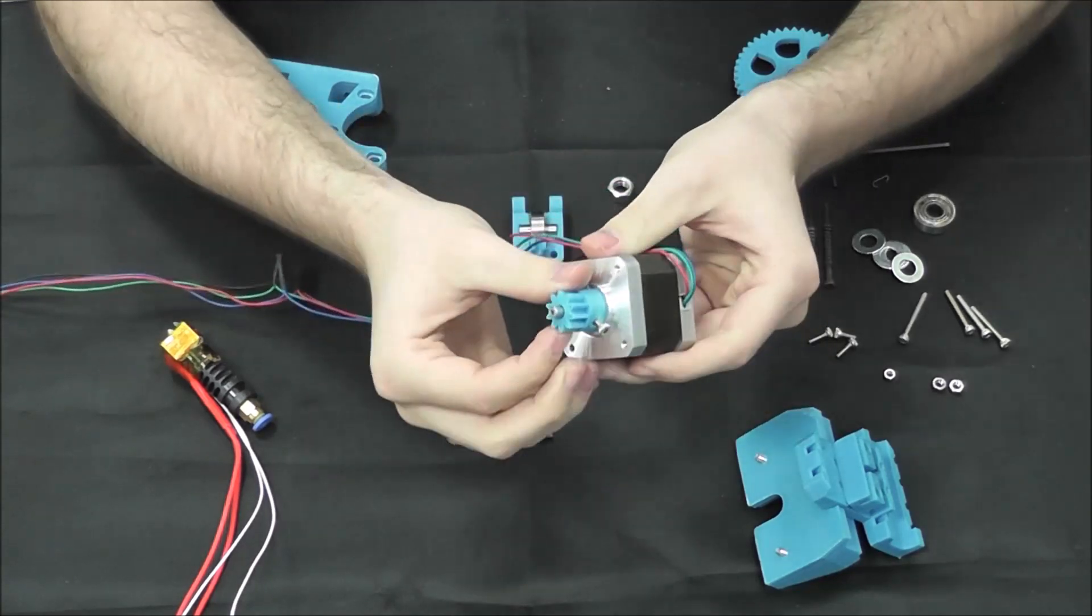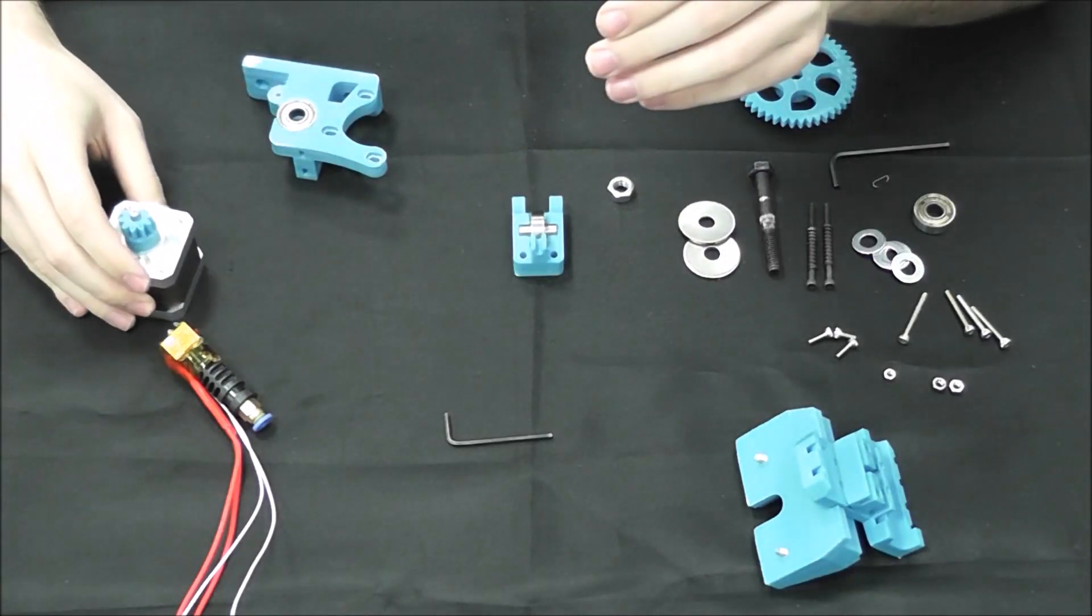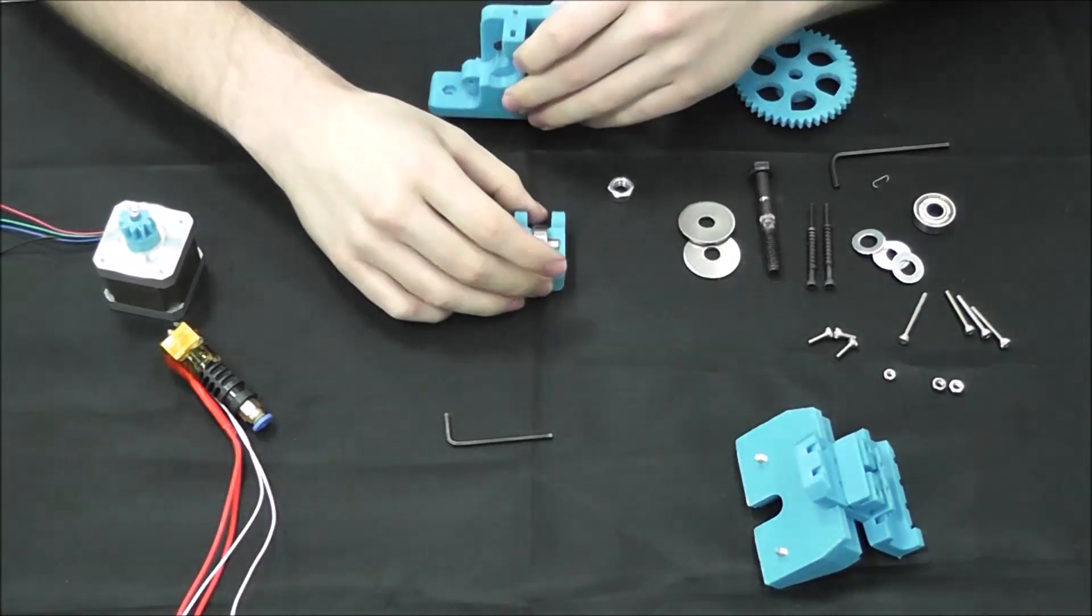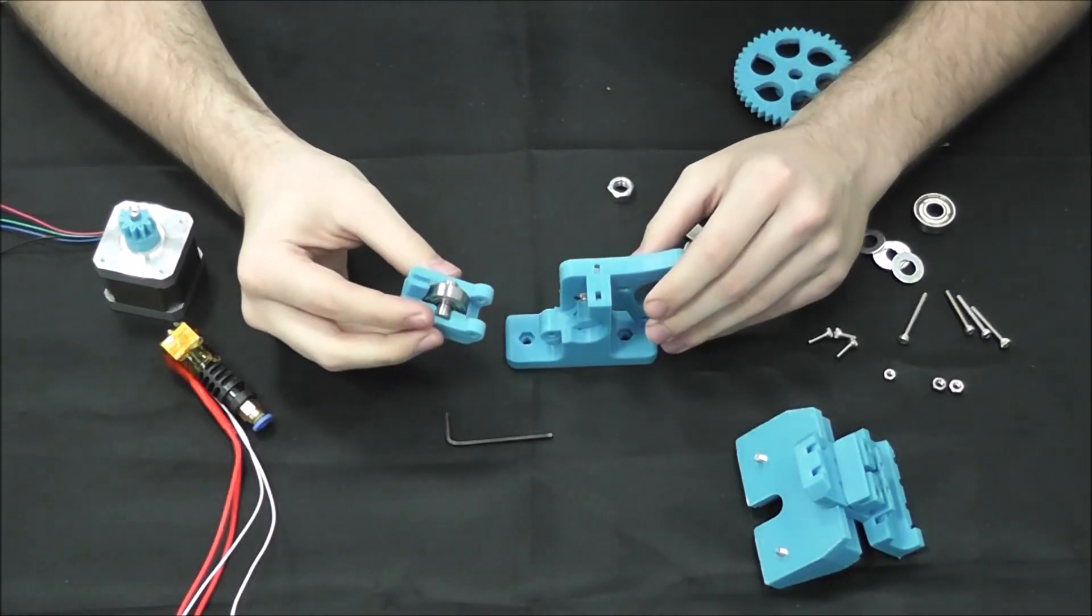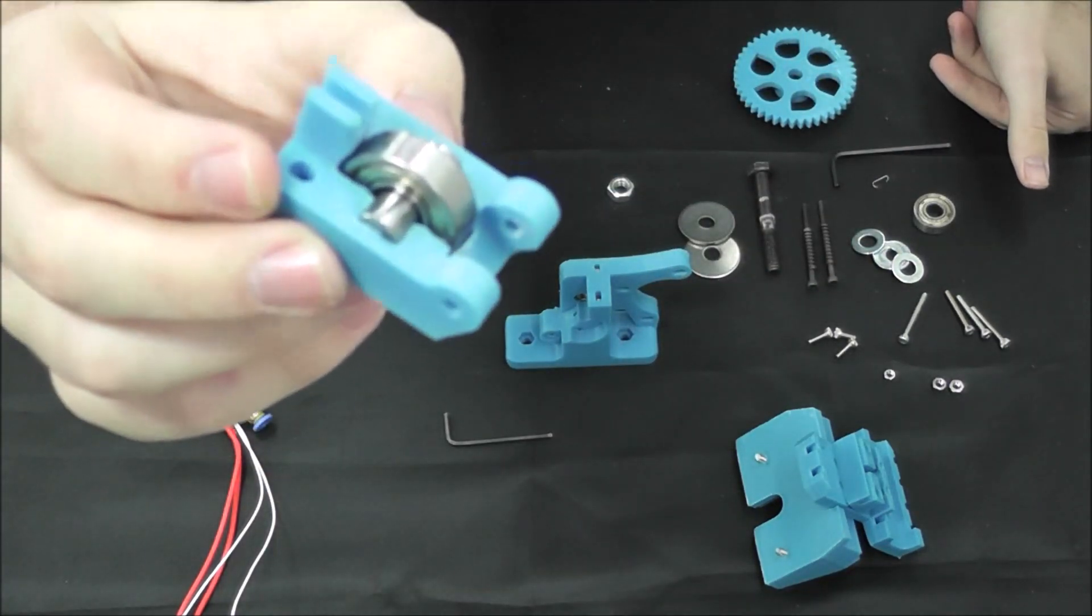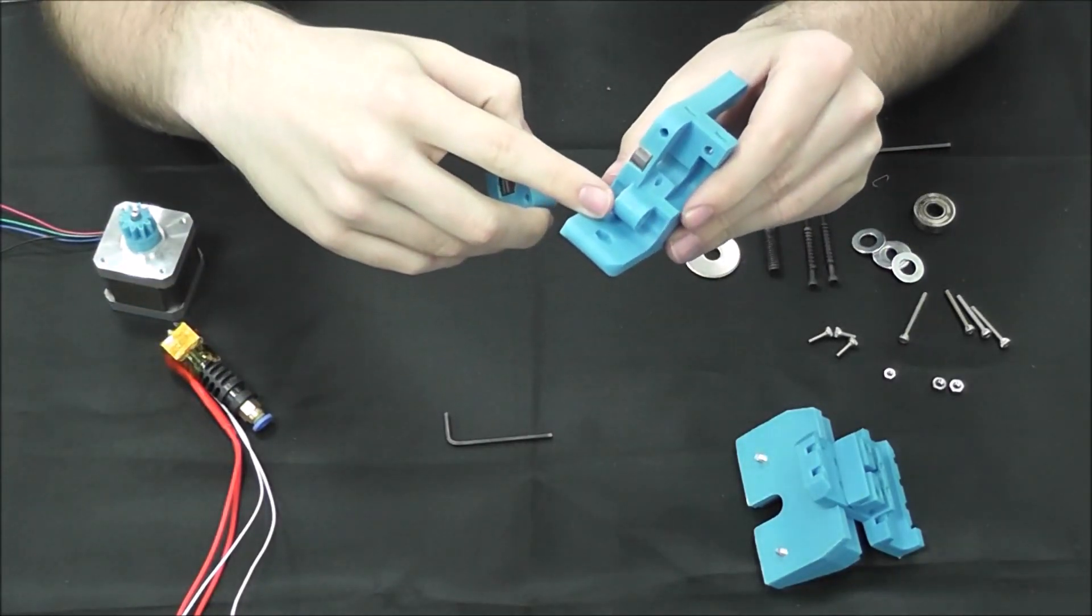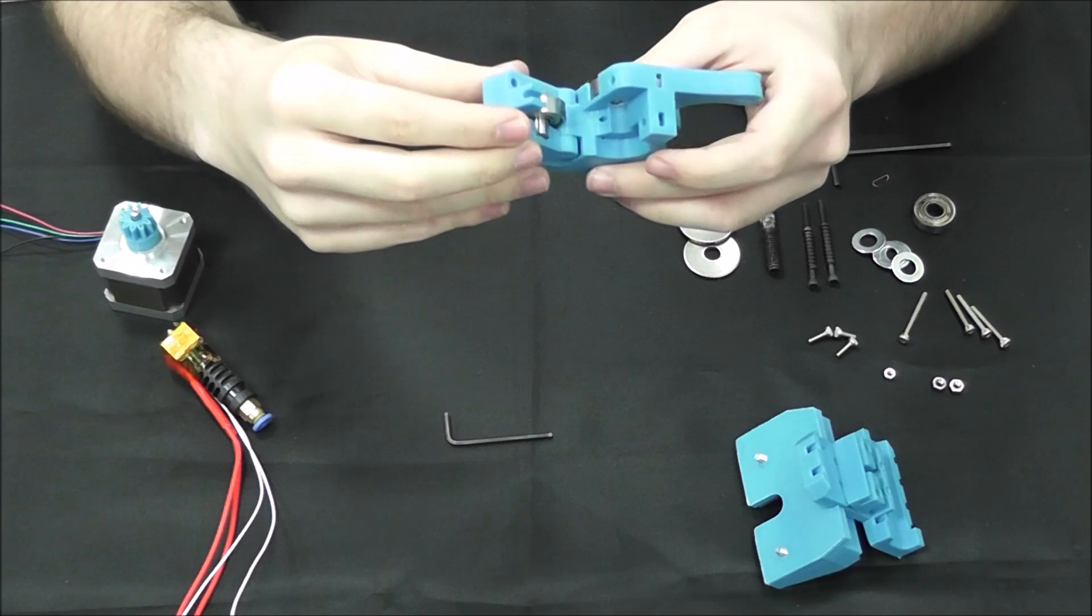So we have the small gear attached to the motor. Next, we're going to put the idler on the body. You'll notice the idler already has the 608ZZ bearing fitted into it with the smooth rod. You'll have a notch here on the front that it'll just slide right over.